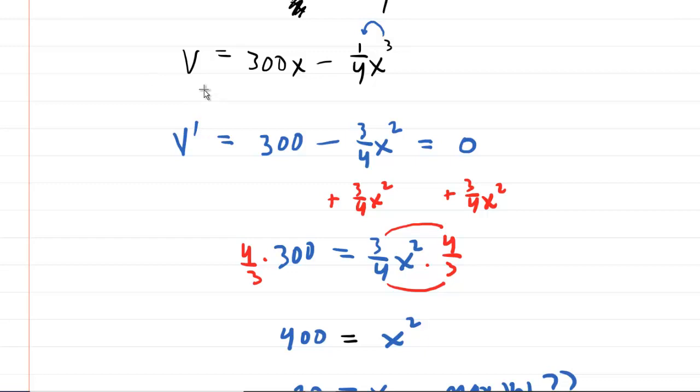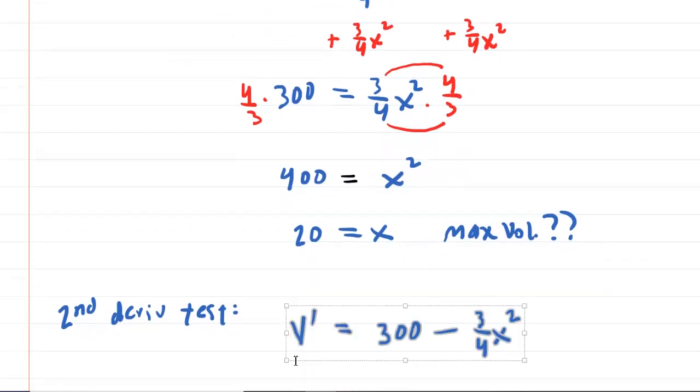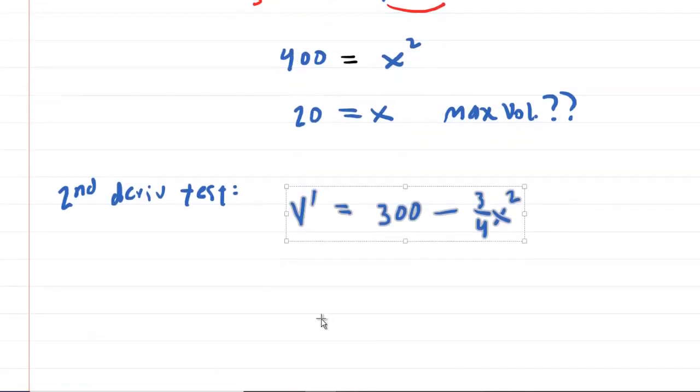And then you're going to want to compute the second derivative. So this becomes V double prime. The derivative of 300 is 0. And then we pull this power down. We end up with negative six fourths X.